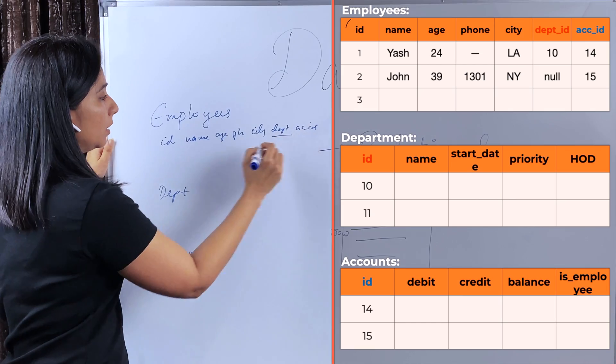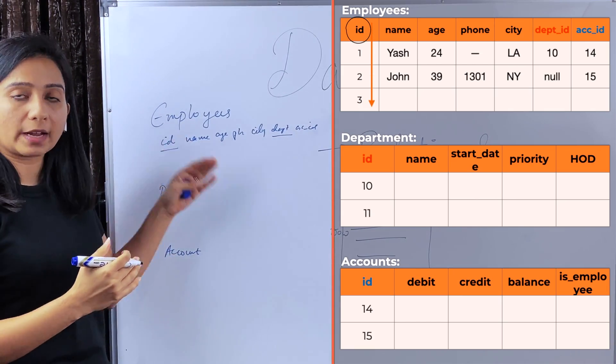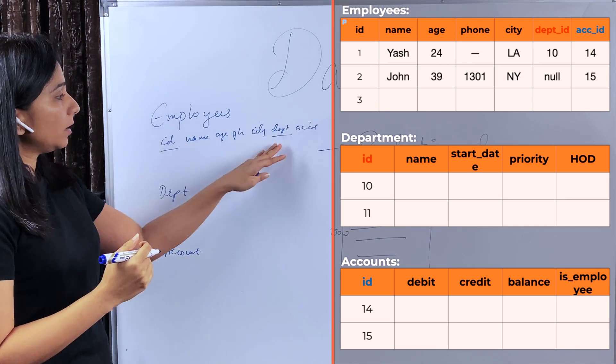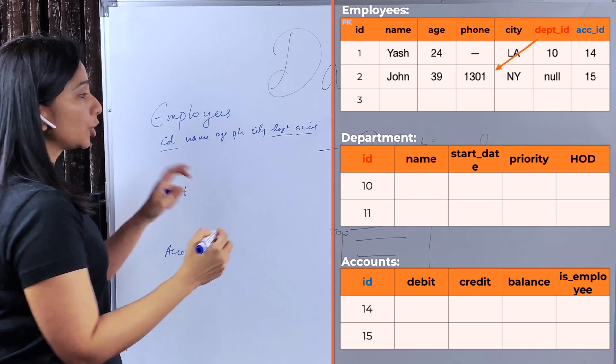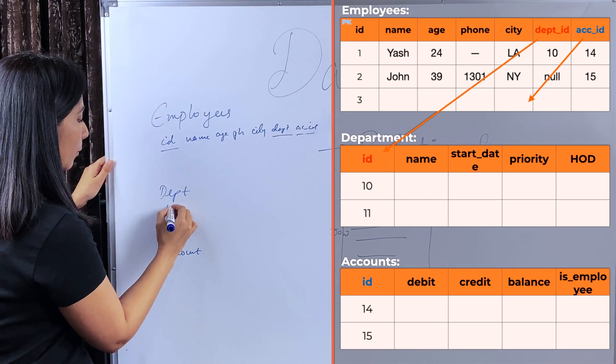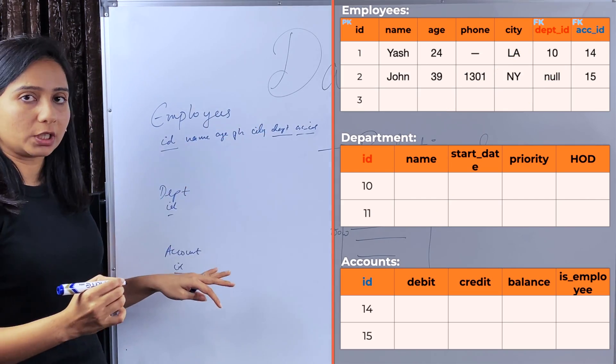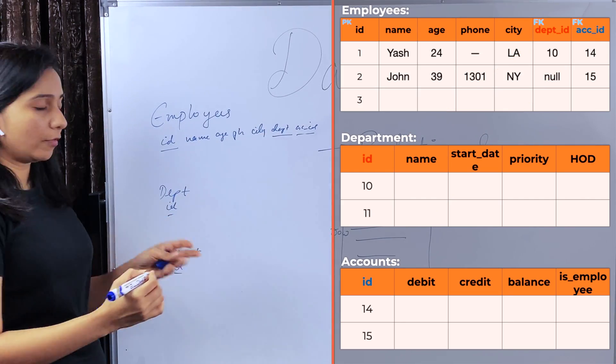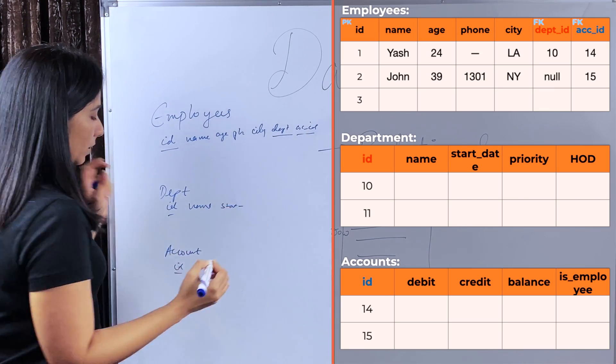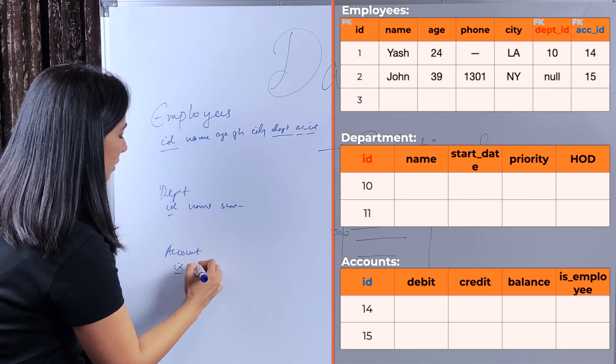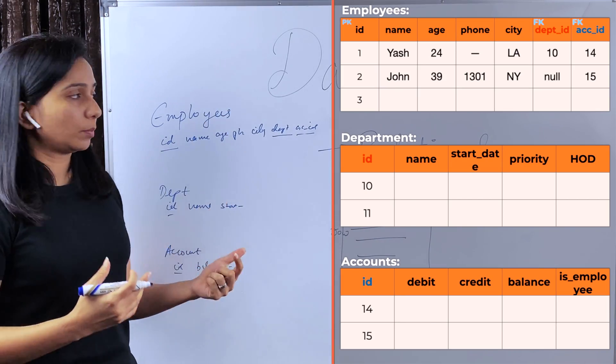Now this ID refers to the primary key or the unique ID which identifies every employee, and department ID and account ID are foreign keys which identify which department this employee belongs to and what is the account ID of this employee. So these are called foreign keys. The department table will have details like the name of the department, when it was started and other details, and account ID will have other details like balance and so on.